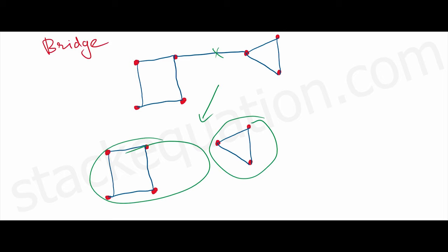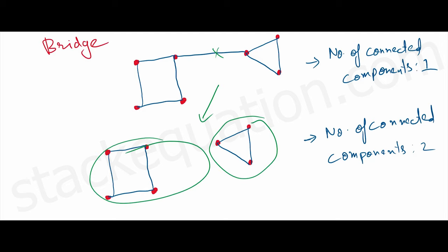Right now here, what is the number of connected components? It's one. Now if I remove this bridge, the number of components increases to two. So we can define a bridge as an edge which, if we remove, will increase the number of components in a graph.